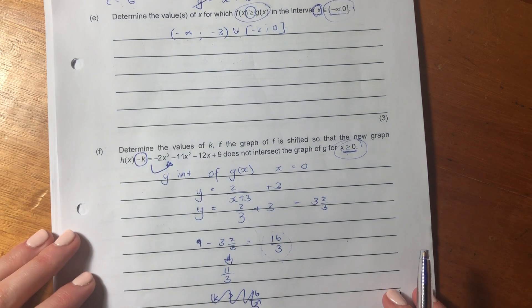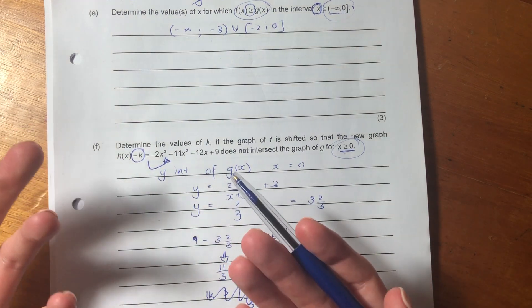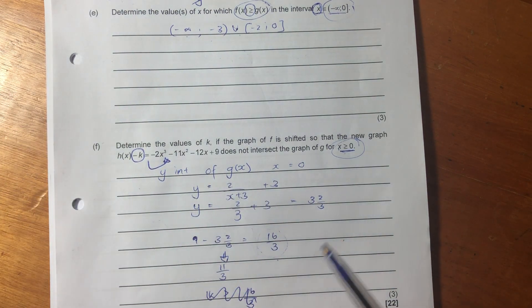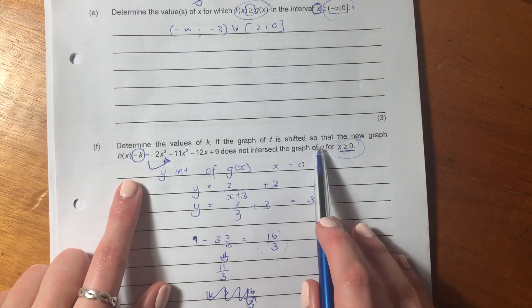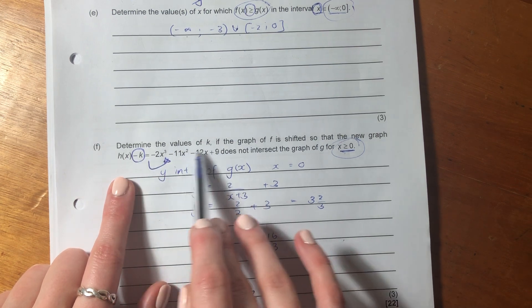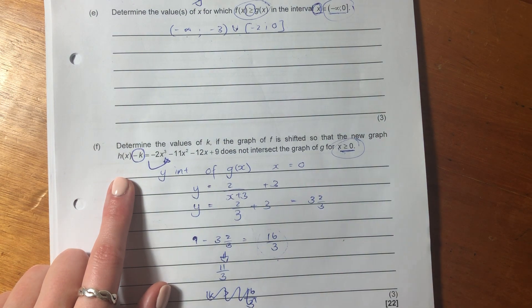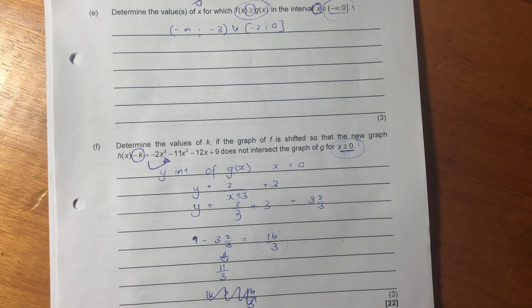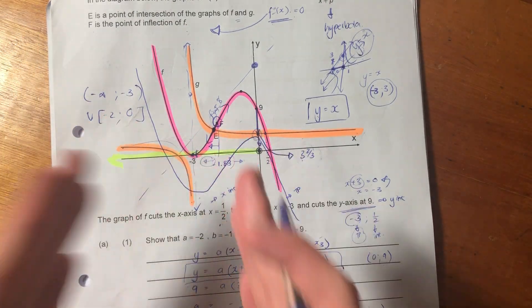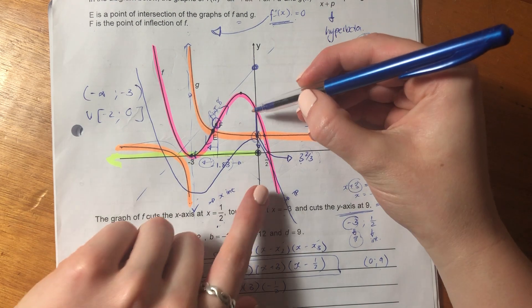So let's now do our last question of this particular functions question. As you can see, it's really been quite complicated. So it says here, determine the values of K. So it's basically saying K can be more than one value, but determine a sort of restriction on K. If the graph of F is shifted so that the new graph, H of X minus K, equals that equation, we really know that equation for the cubic, does not intersect the graph of G for X greater than zero.